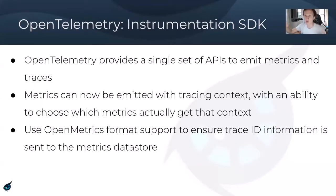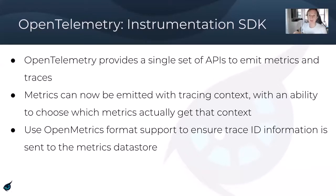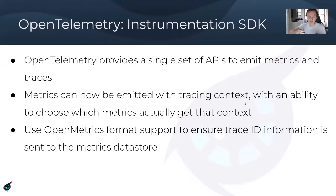The next step is making code emit trace IDs as exemplars. OpenTelemetry is an instrumentation SDK that lets you instrument your applications to emit both metrics and traces. By modifying this common library, we can make it abide by the use of exemplars — so when exposing metric values, it includes whatever contextual span ID is associated with the context of that request. By modifying this library, we ensure that when we emit metrics, we're including trace IDs as exemplars in code.